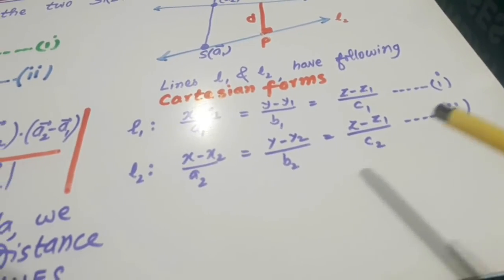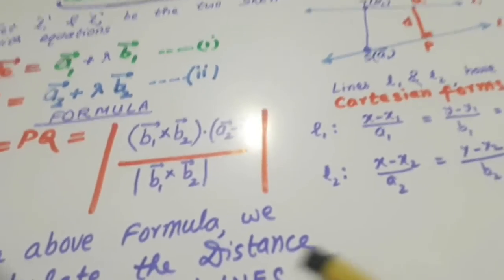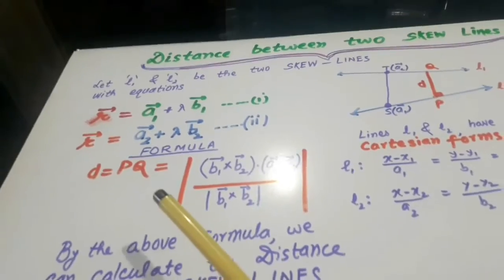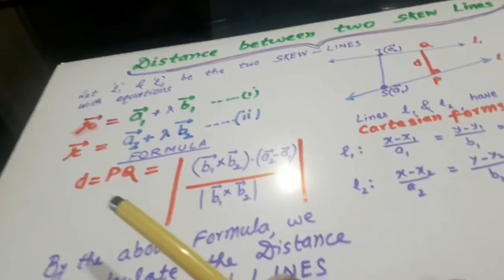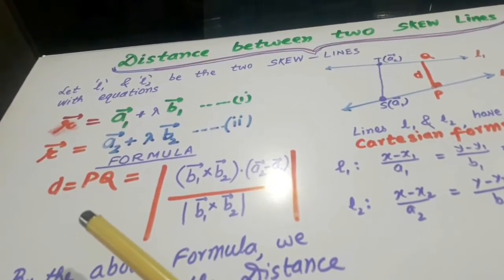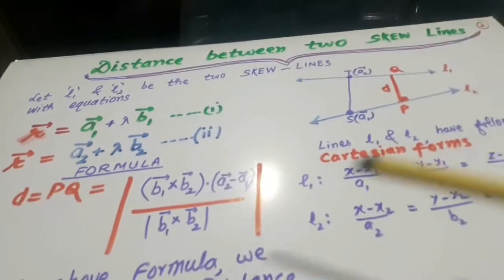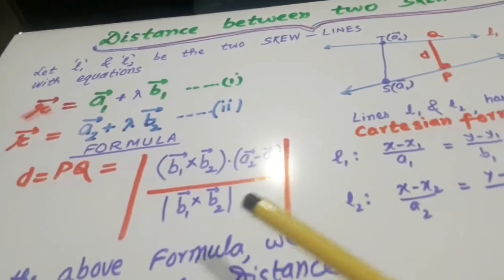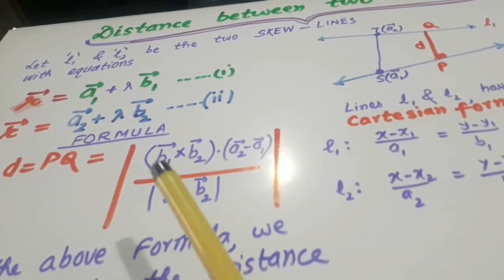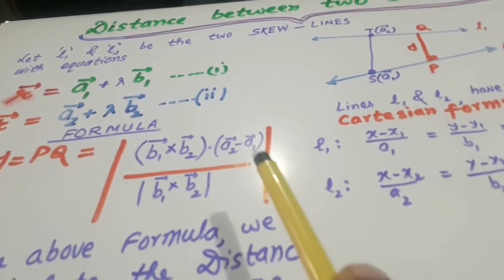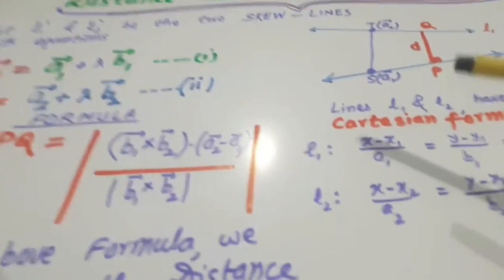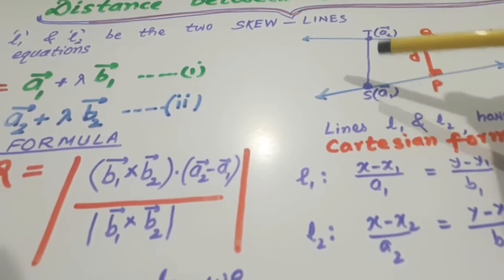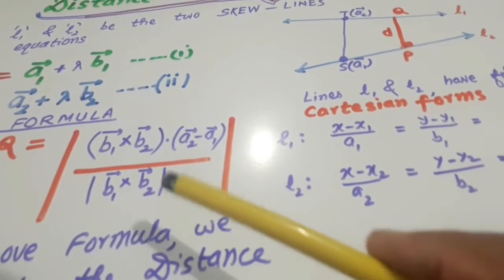Now, the formula is D, this is the shortest distance, this is the shortest distance PQ. It is basically projection of A2 minus A1, this is A2 minus A1, on B1 cross B2.